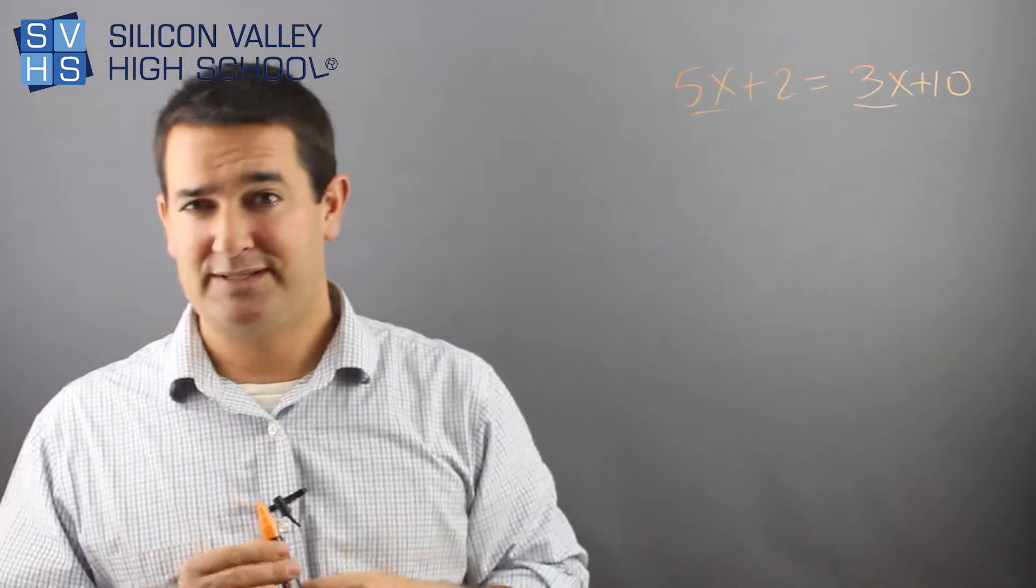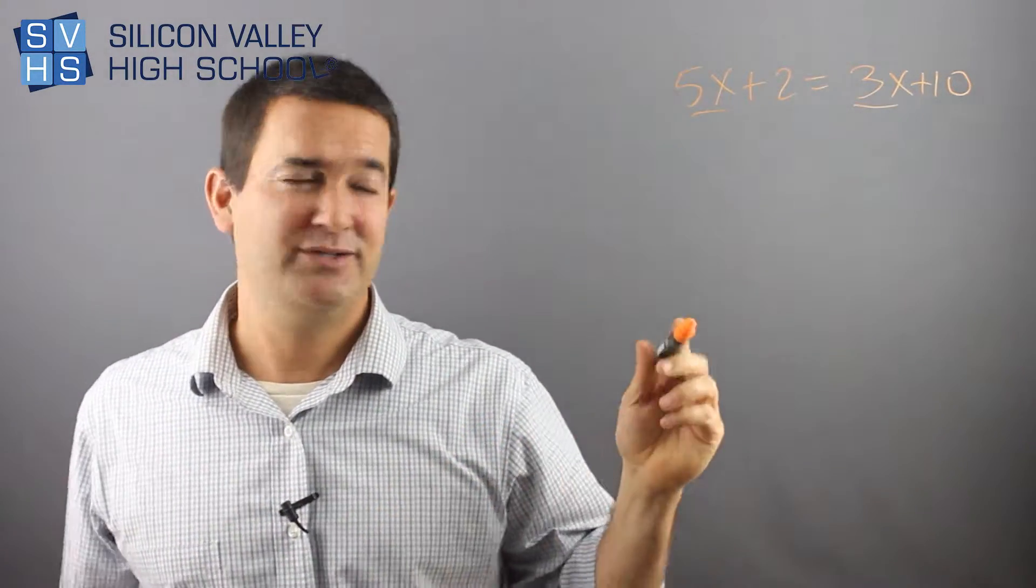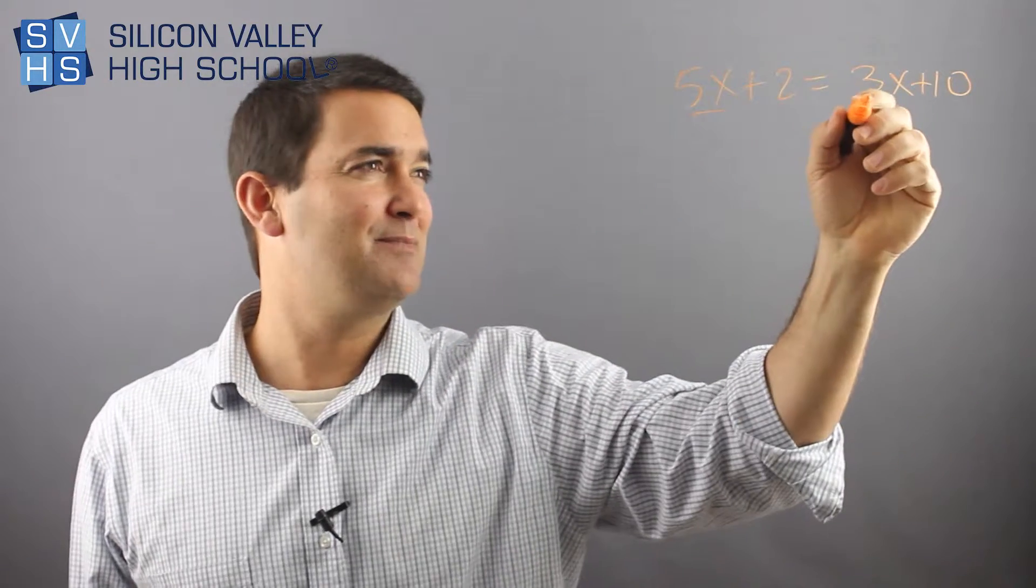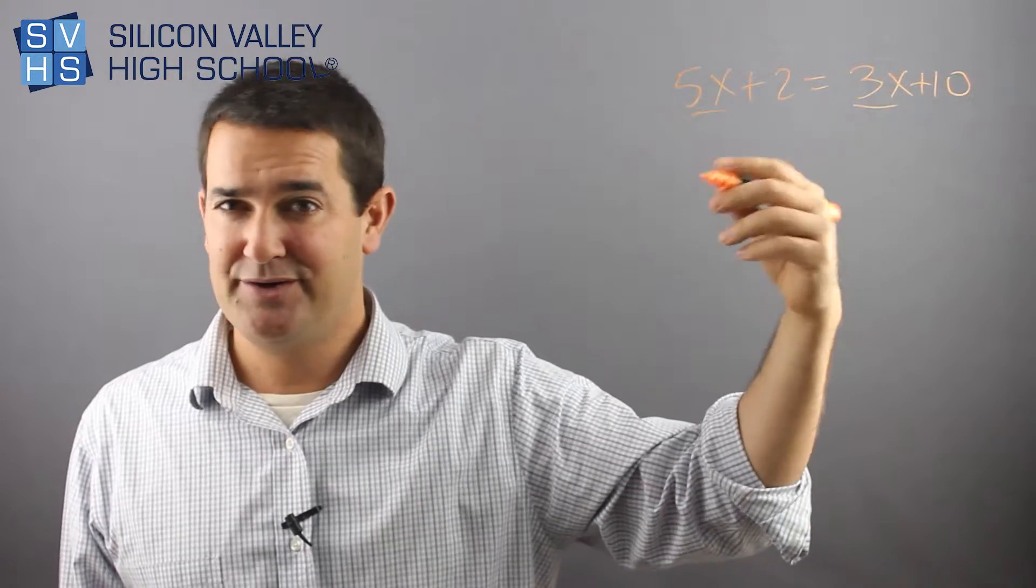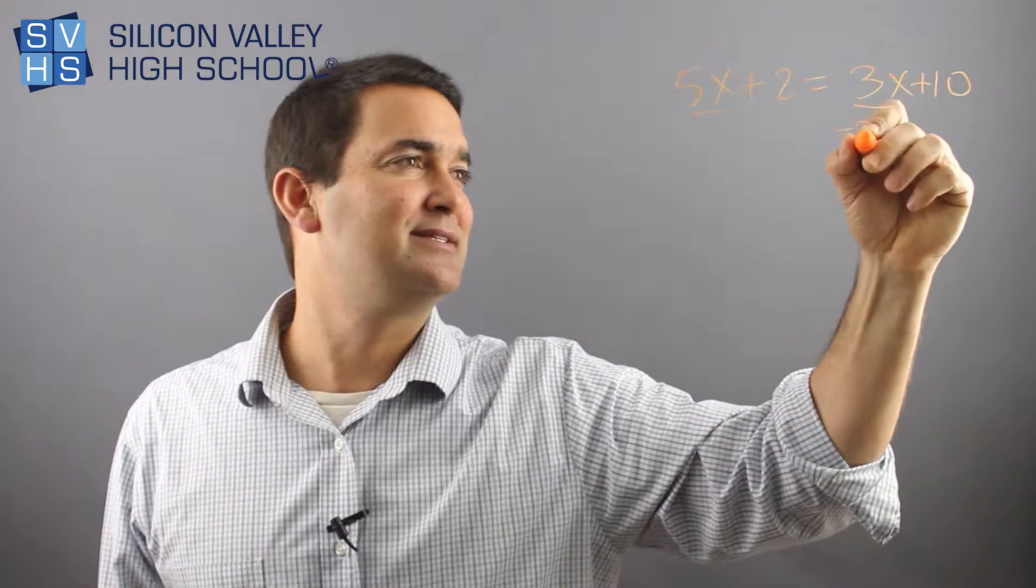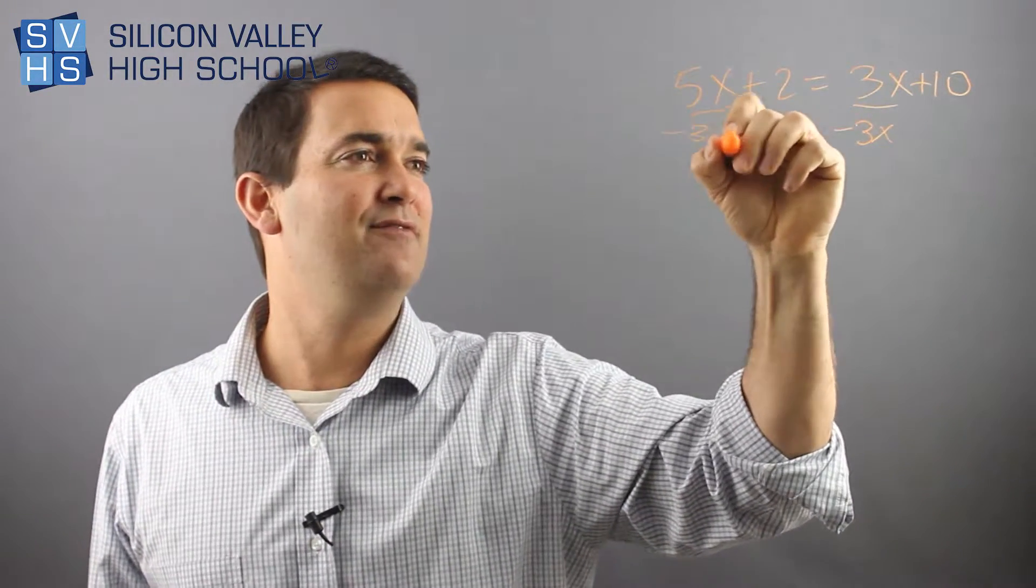And remember, to move something to the other side of an equal sign, really you just do the opposite. So here's a positive x. If I want to move them to this side, what's the opposite of a positive x or how do I undo a positive x? I subtract 3x from both sides of the equal sign.